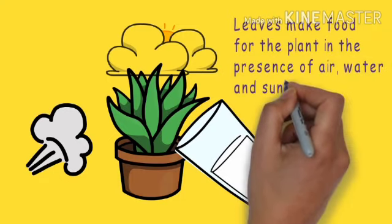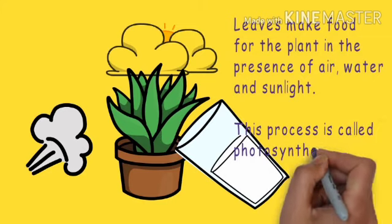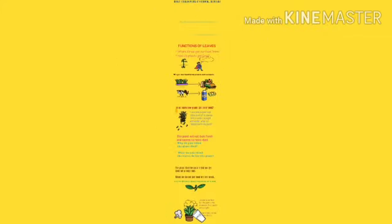They convert carbon dioxide into oxygen gas, and this oxygen gas is used by us for breathing. This process is called photosynthesis. This was all about functions of leaves. Leaves play an important role for a plant. Have a good day, thank you.